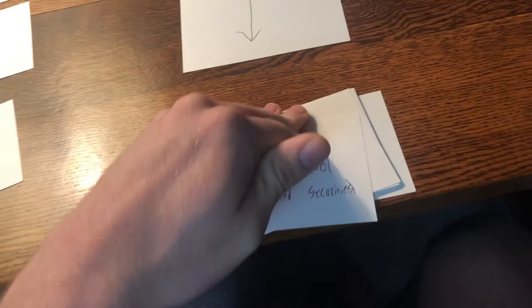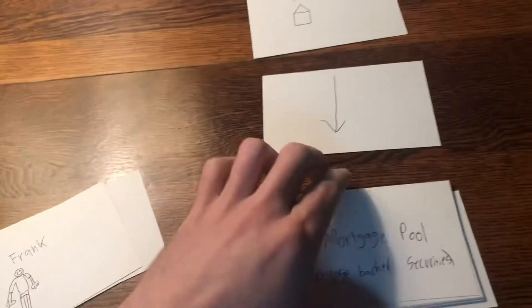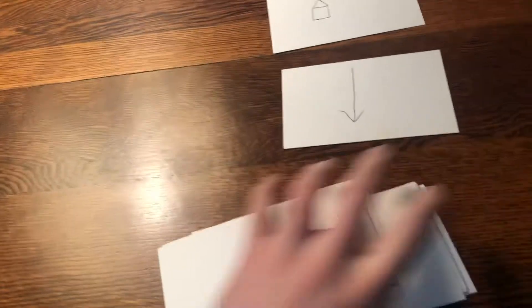This is where the process of securitization comes into play. Essentially, what they want to do is pool these mortgages. They get all these other mortgages in this stack, and they add Frank, Joe, and Megan's mortgage to the pool. They just throw them in here anywhere, and boom, we have a pool of mortgages.